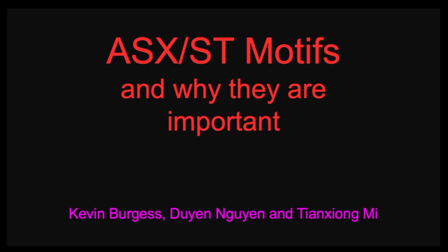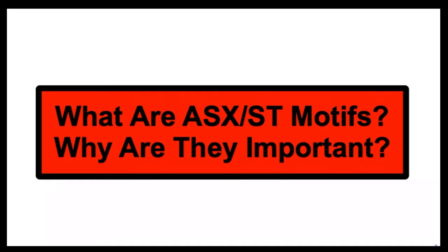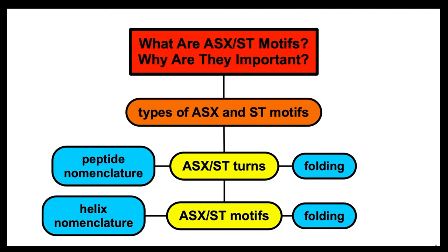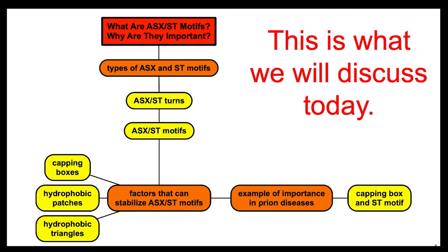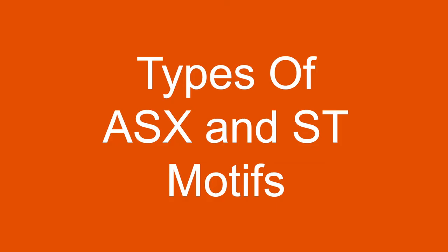Let's talk about ASX and ST motifs and why they are important. In this video, we consider what they are, different types of ASX and ST motifs, ASX and ST turns, then ASX and ST motifs. Then we'll talk about factors that can stabilize these. Finally, we'll talk about the hypothesis for how these may impact prion diseases.